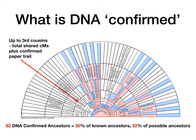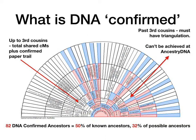So what do I mean when I say DNA confirmed? Up to third cousins, it's having the total shared centimorgans consistent with what's expected, plus a confirmed paper trail. But past third cousins, you must have triangulation — and this is where Genomate Pro comes in. It helps you keep track of where you have triangulated matches and allows you to focus on the gaps. AncestryDNA doesn't give you any chromosome data, so it can't be used for DNA confirmation past third cousins. This is where GEDmatch comes in, and it's important to load GEDmatch information into Genomate Pro as well.